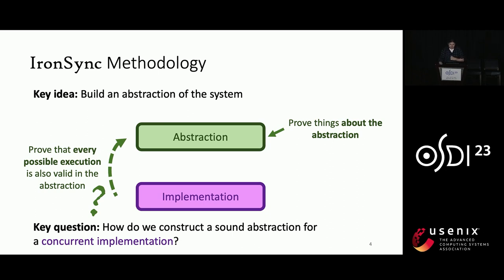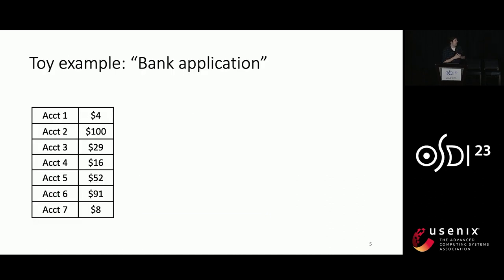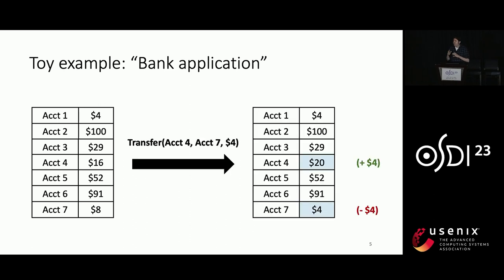To answer this question, I'm going to explore it through a toy example I'll call the banking application. In the bank application, we're going to have a bunch of bank accounts, each with some ID and some amount of money in it. We're specifically going to be concerned with transfer operations, where we move money from one account to another — for example, money is moved from account seven to account four. This transfer operation, as a function from one state to another, forms a high-level description of how we want the bank to work.